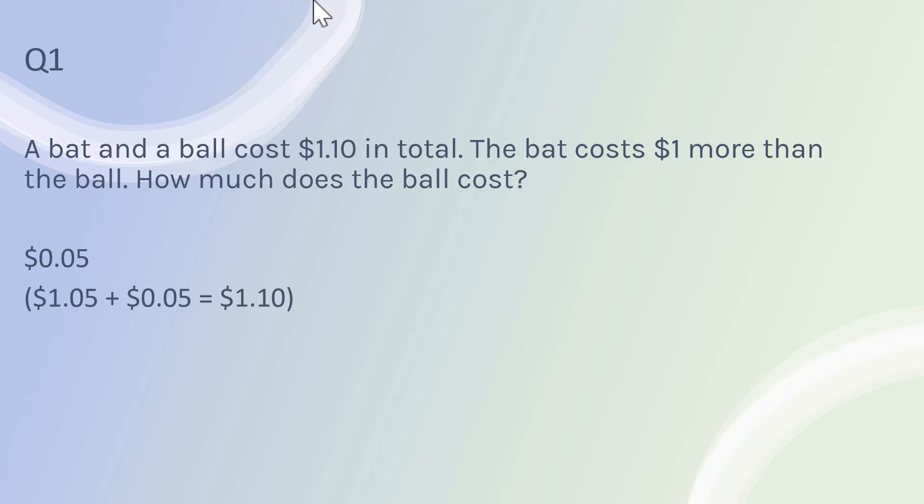Sometimes you might get different variations of this question, so it's really important that you read carefully. The other thing that people sometimes will do incorrectly is they will give the price of the wrong item. In this case it was asking for the ball, which is the cheaper of the two items.